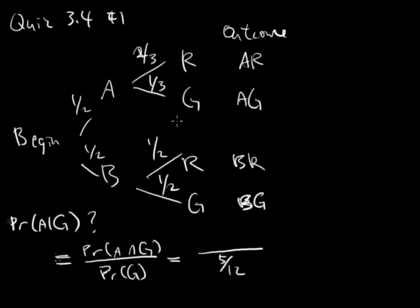And A intersect G is you multiply the two. So you have 1/2 times 1/3, which is 1/6.